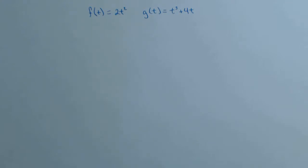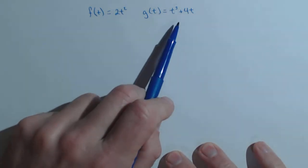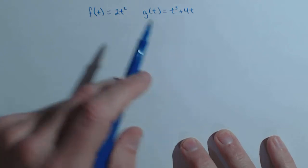So in this video, we're going to see the need for the product and quotient rule. So we're given f of t equals 2t squared, and g of t equals t cubed plus 4t.